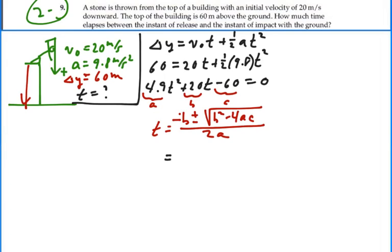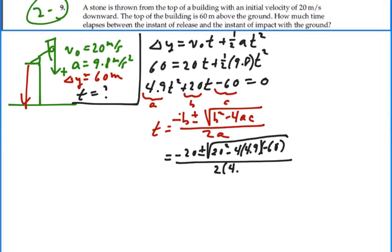In this case, this would be negative 20 plus or minus the square root of 20 squared minus 4 times a times c, negative 60, over 2 times a, 4.9.